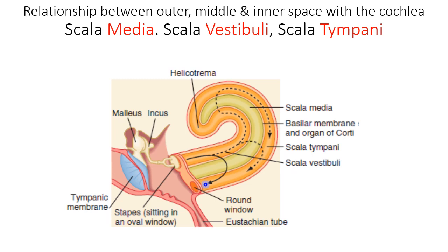What about the middle one? This middle one is scala media. It is not connected with any turns — not with the scala vestibuli and not with the scala tympani. It is a closed chamber. This closed chamber has two layers.